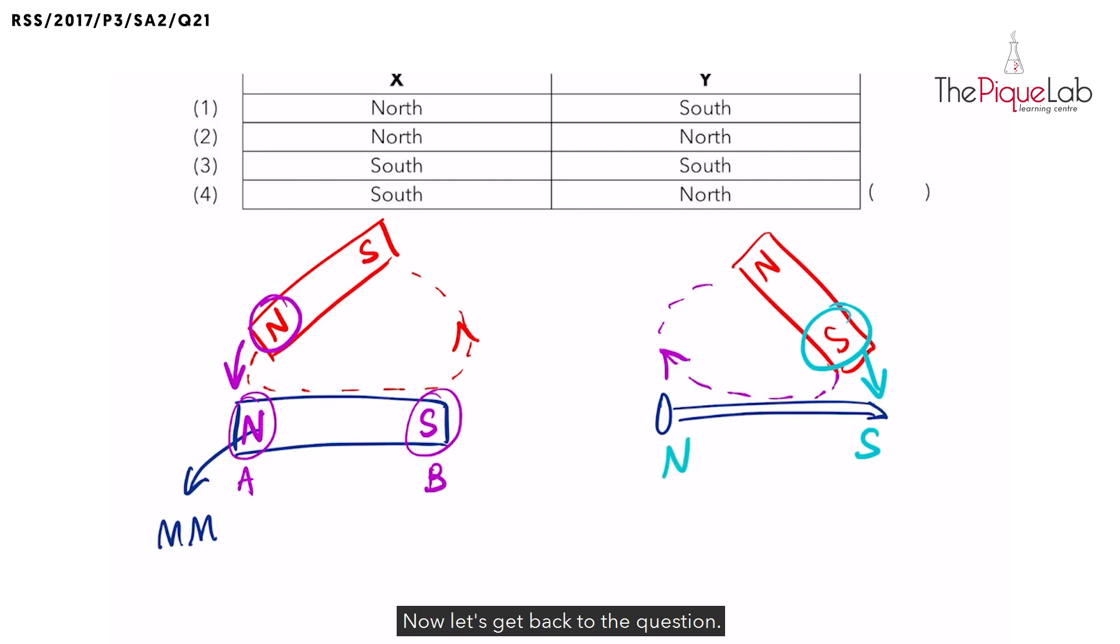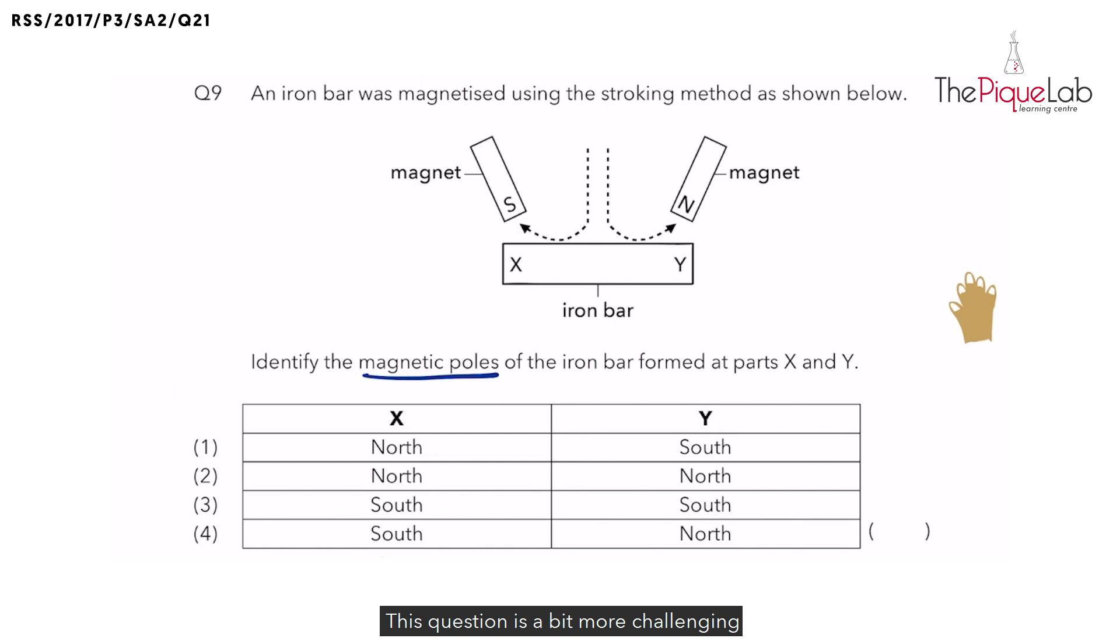This question is a bit more challenging as now we are using two magnets to stroke the iron bar. But not to worry, we can apply the same technique as what I taught you earlier. But before that, what I would need you to do is to draw a line in between just like that.